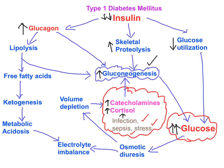Absolute deficiency or absence of insulin leads to decreased peripheral utilization of glucose, elevating blood glucose levels. Hyperglycemia leads to osmotic diuresis, which causes volume depletion, which in turn worsens elevation of catecholamines and cortisol. Elevation of ketone bodies in the blood leads to metabolic acidosis, and both metabolic acidosis and volume depletion contribute to electrolyte imbalance — these are the key pathophysiological features of diabetic ketoacidosis.